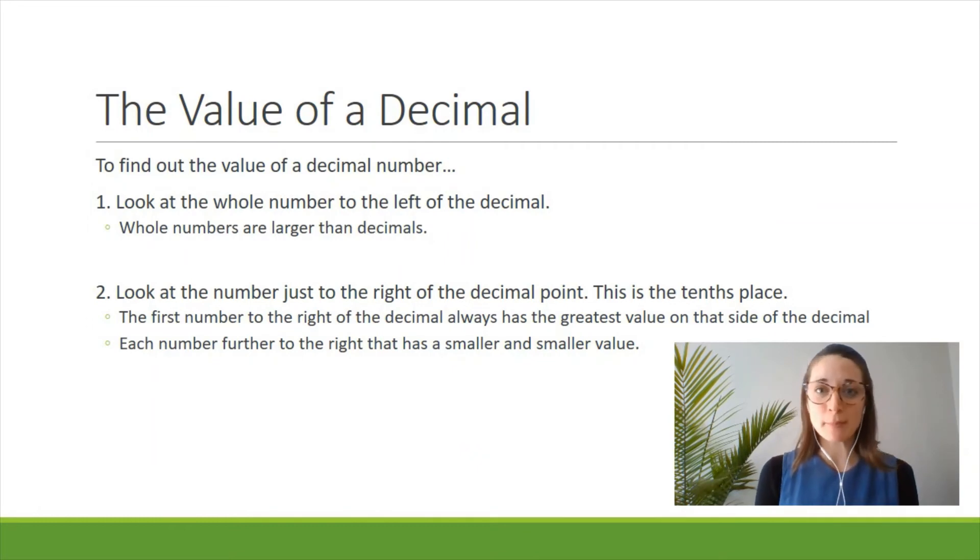Here are a couple of rules to remember when you're trying to find the value of a decimal number. First, look at the whole number to the left of the decimal. Whole numbers are always larger than decimals. The only exception is if you don't see a whole number, in which case you'll assume that value is zero. Next, look at the number just to the right of the decimal point. This is the tenths place. The first number to the right always has the greatest value, so look at this first and then continue moving right. Each number after that will have a smaller and smaller value.